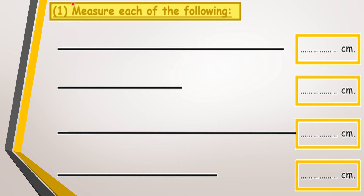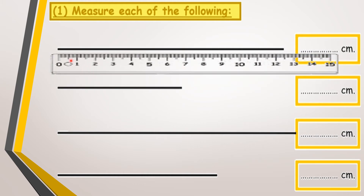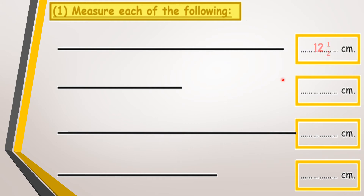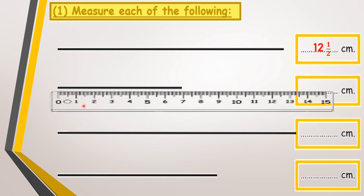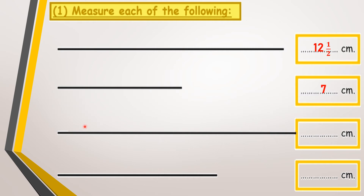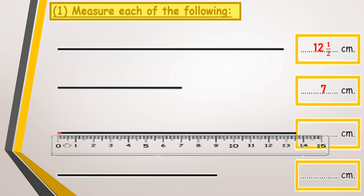Now we'll measure each of the following lines. I will measure the length of this line using a ruler. Please use your own ruler to measure along with me. Place the ruler starting from zero — put the beginning of the line at zero — and look at where the end of the line falls. The first line is seven centimeters.